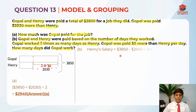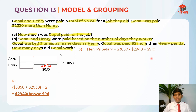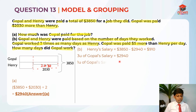Henry's salary is $3,850 − $2,940 = $910. We know Gopal worked three times as much as Henry, so we take three units of Gopal's total salary as $2,940 and one unit of Henry as $910. One unit of Gopal's daily pay is $2,940 ÷ 3 = $980.